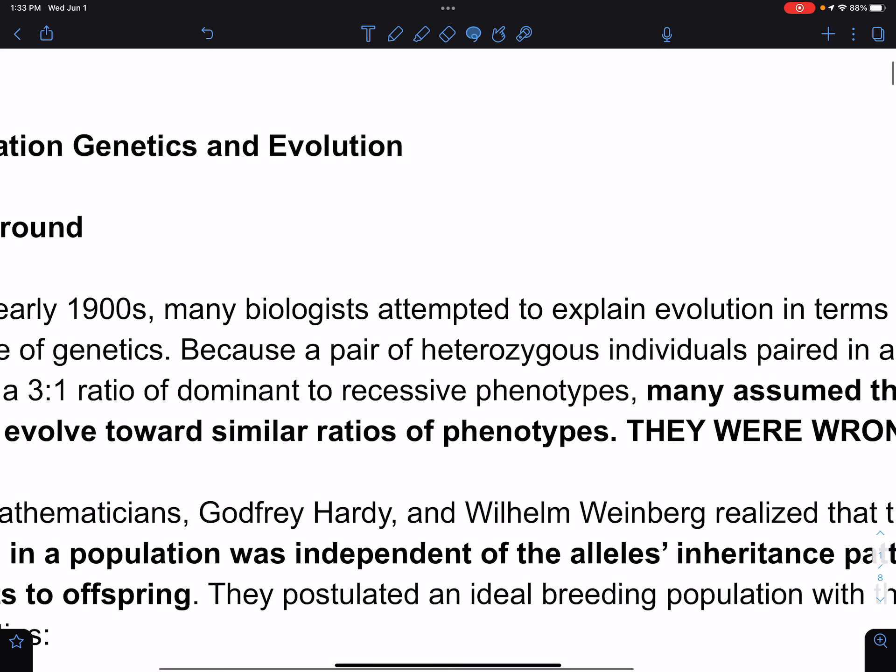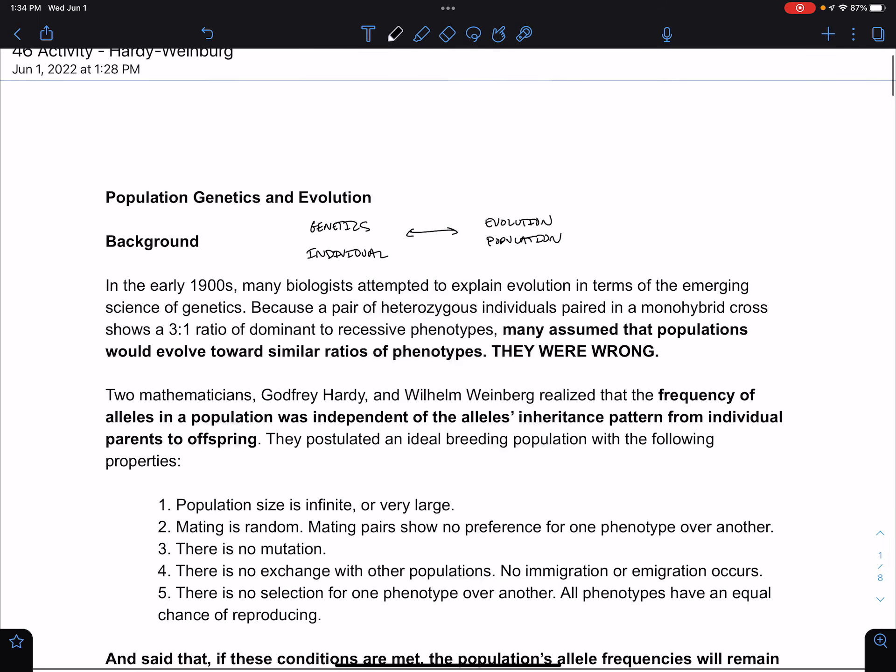We've been talking about genetics, mostly at the level of the individual, and we've also been talking about evolution at the level of the population. Today's screencast is supposed to be a marriage between what's happening at the level of individuals and Punnett squares and how we can use that to talk about what's happening at the level of the population and evolution of that population.